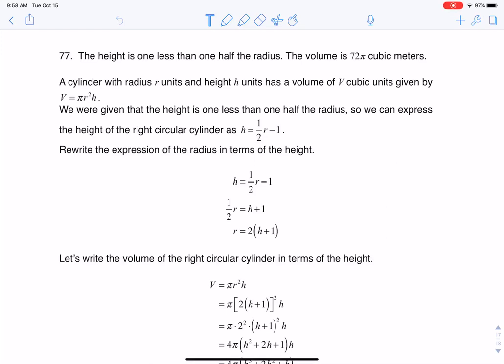Hey, Matt 31, I had a question coming out of section 5.5, number 77, and in this problem we were being asked to find the dimensions of the right circular cylinder described, and it was described as the height of this cylinder is one less than half the radius and the volume is 72 pi cubic meters.